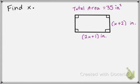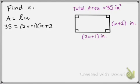Here, we are given a rectangle. They tell us that the total area is 35 inches squared and that the two sides are 2x plus 1 and x plus 2. And they want us to find x. Well, if they tell us the area, let's use our area formula. So we know that area equals length times width. So 35 equals 2x plus 1 times x plus 2. And it does not matter which one is the length or the width.